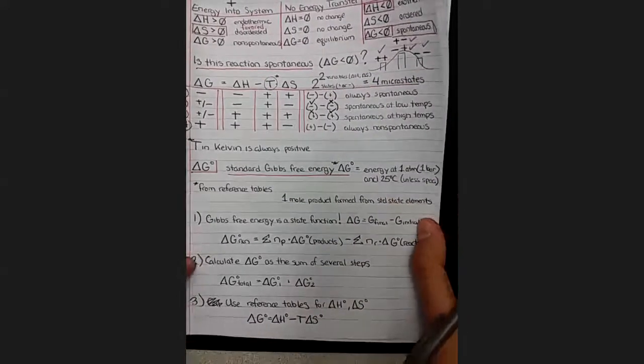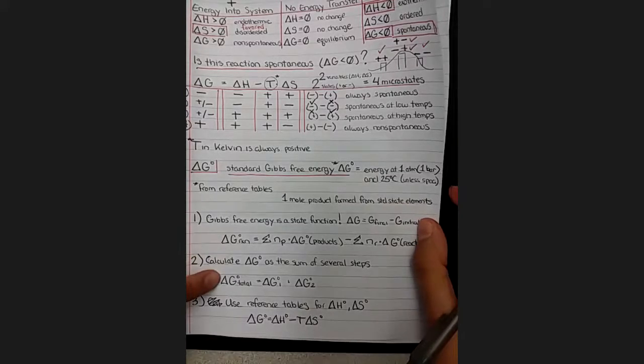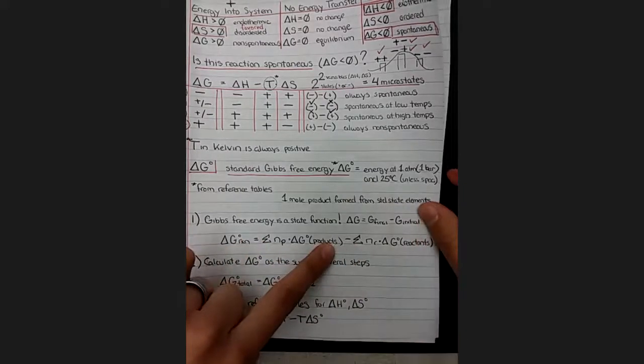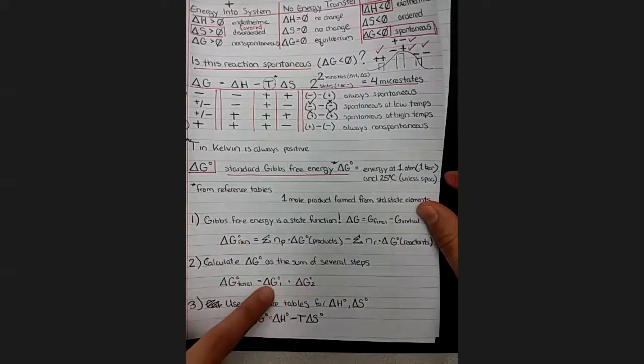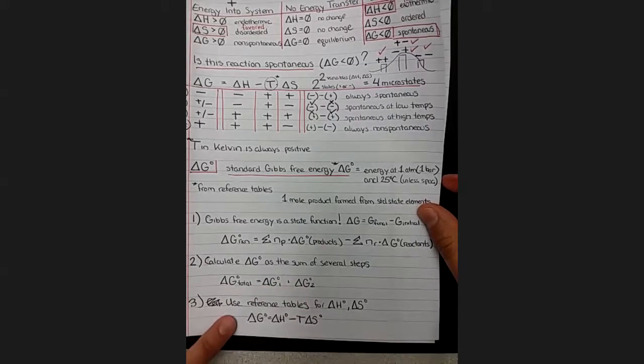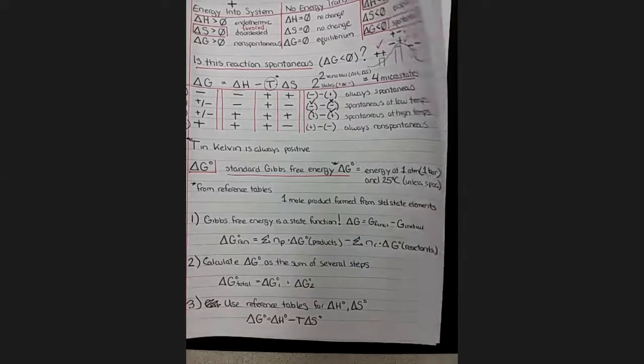So notice two of these methods, the first and the second, require having delta G values for something else, either the individual component compounds or for sub steps that happen along the way. Method three is the only one that doesn't require having another delta G value.